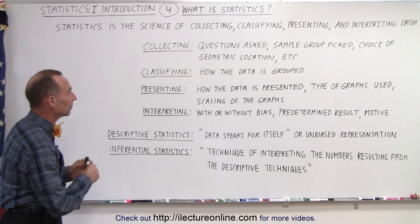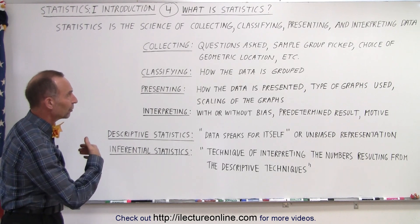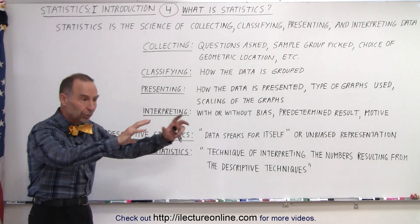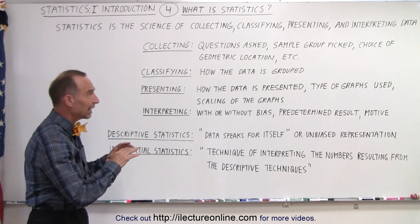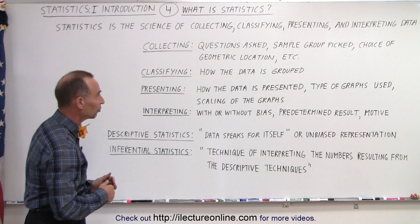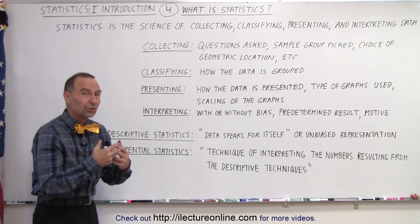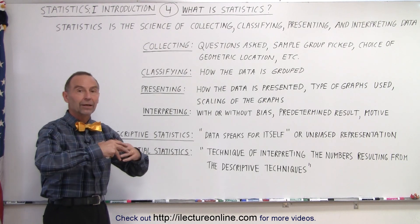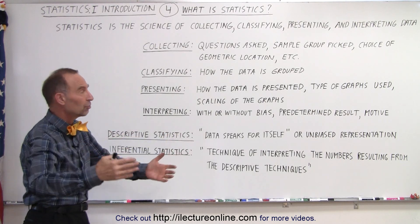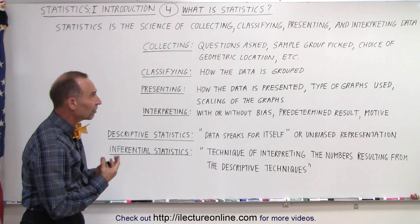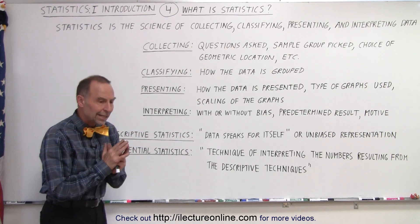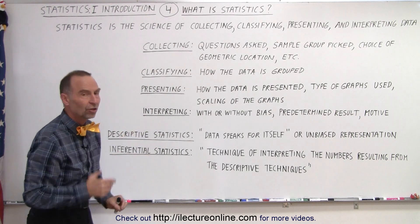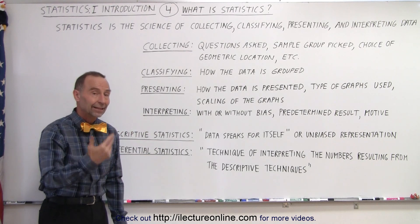First of all, the collecting of data. That depends on the questions being asked — whether these are surveys, the sampling group picked, the sample group of what you want to investigate in order to represent the total population, and the choice of geographic location. It could be a scientific experiment on a circuit board or an experiment in a geographical location on a population. We need to carefully decide how we're going to collect the data.